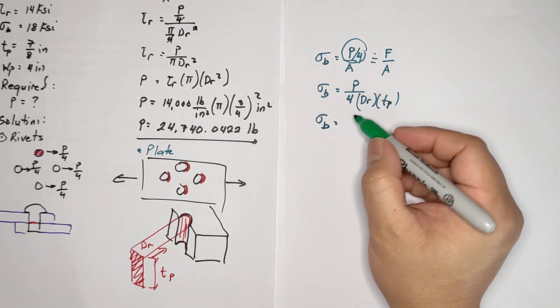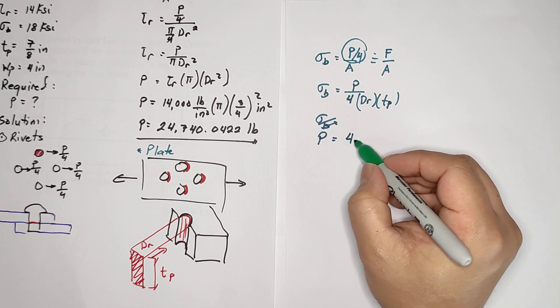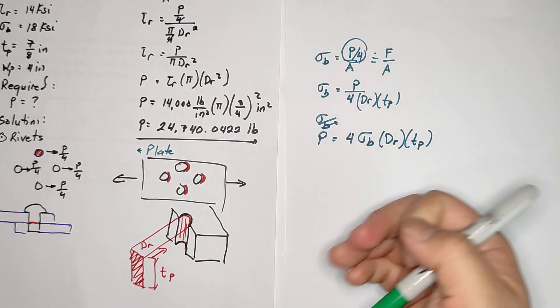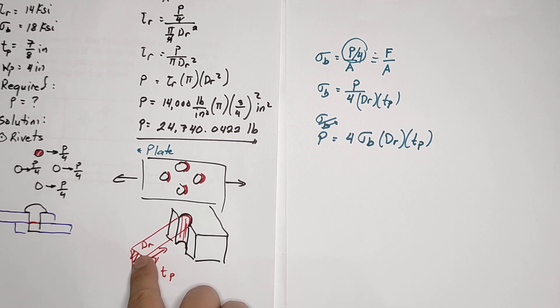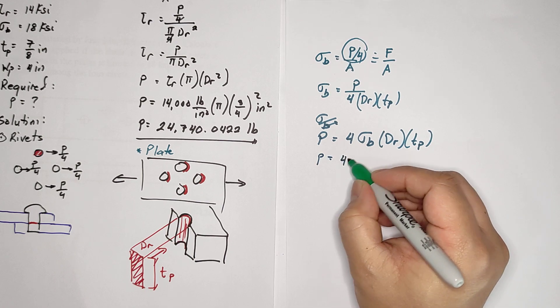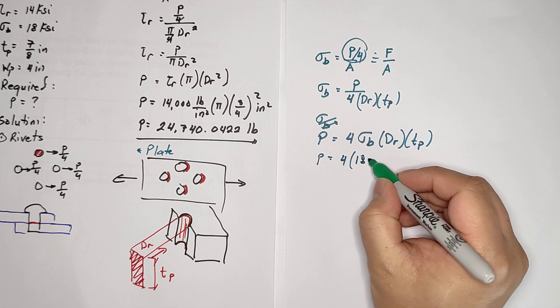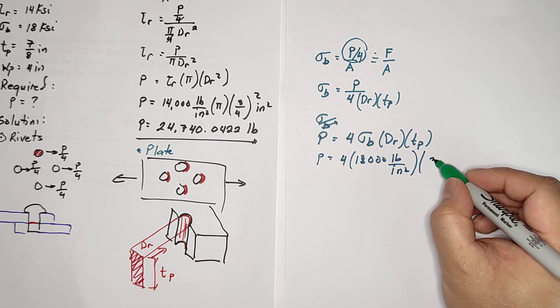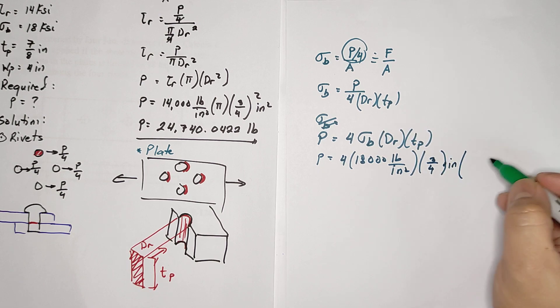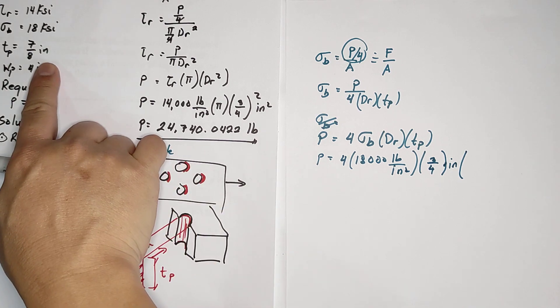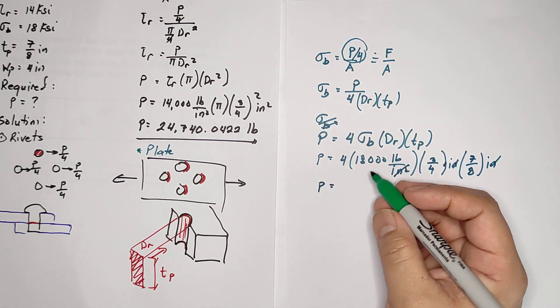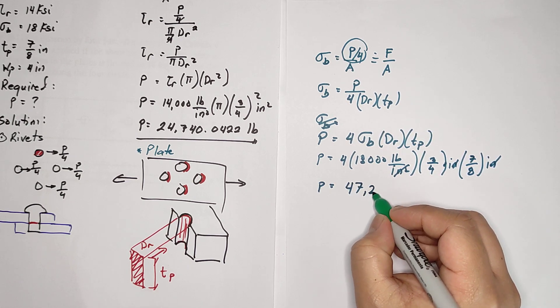Let's substitute the values. P = 4 × bearing stress × dr × tp. That's 4 × 18,000 pounds per inch squared × 3/4 inch × 7/8 inch. Cancel the units - inch squared cancels - you now have a force equivalent to 47,250 pounds.